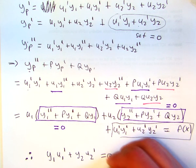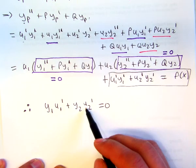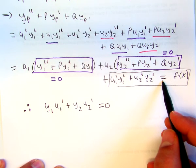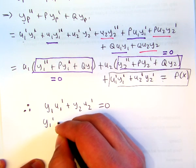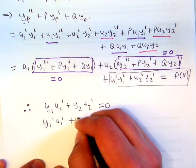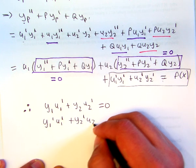So this is our first condition, and now we arrived at this, which says that y1 prime u1 prime plus y2 prime u2 prime equals f of x.